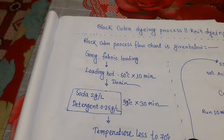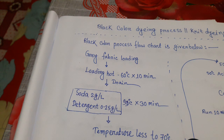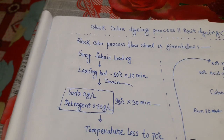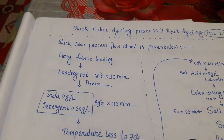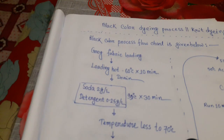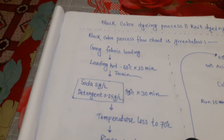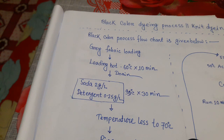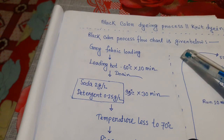Assalamualaikum, hello viewers, hope that you are well. Today I'm going to discuss the black color dyeing process for knit fabric. The material and liquor ratio is 1:7. The black color process flow chart is given below.